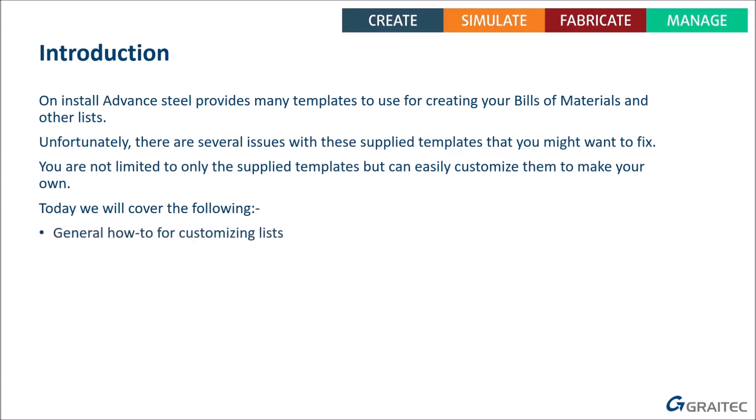Specifically, we're going to look at: general things about how to customize lists — general rules and ideas so you know what you can play with; understanding field content, since quite a lot of fields or properties are cryptic and I'll try to demystify those; known issues with the existing templates you might want to fix; getting sorting correct; and adding formulas to your lists. We want to keep this short as a skill builder, so let's move on promptly.